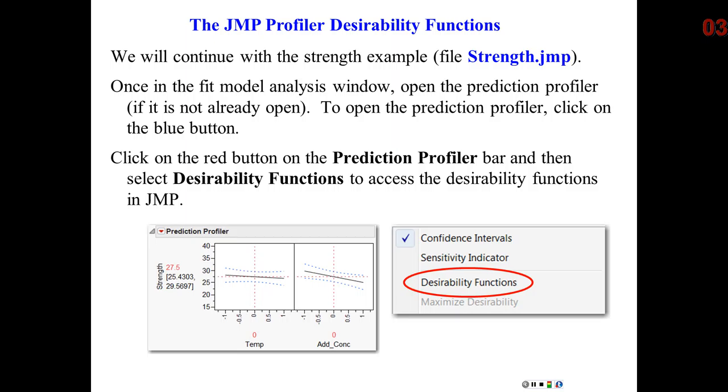And that by itself is useful, but built into the profiler is a very powerful optimization function, sometimes called desirability functions. And I'm going to demonstrate them to you in JMP in just a moment,